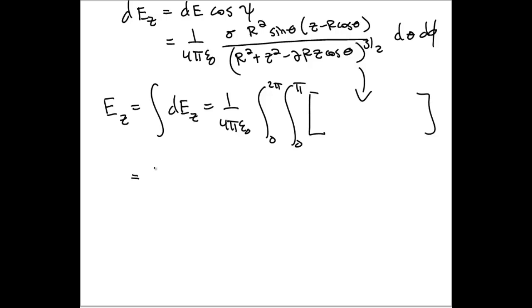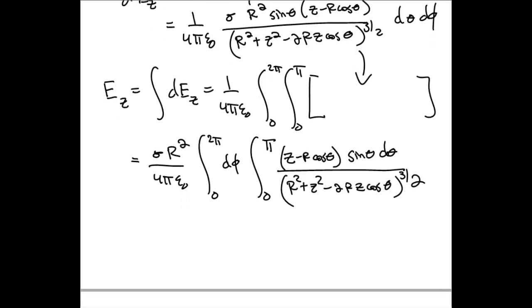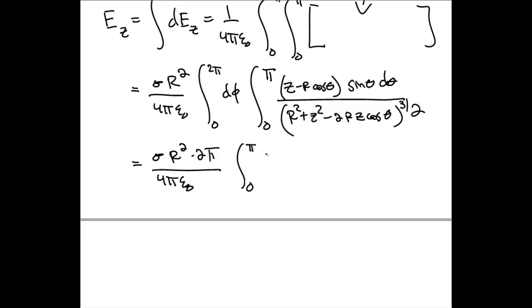Separating out the two integrals and pulling out constants, we can make this look a little bit nicer. The phi integral can be done rather simply, and will just give us a factor of 2 pi, leaving just the theta integral.